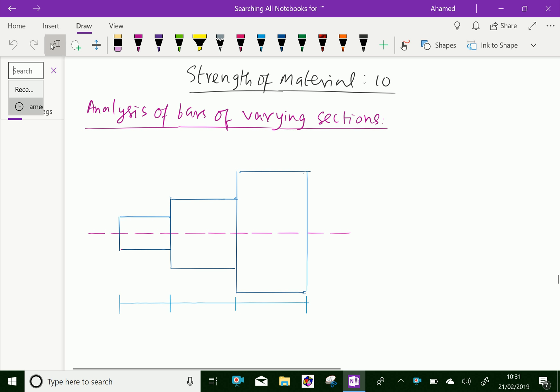Here, look at this figure. A bar of different lengths, different diameters, and hence different cross-sectional areas is given in the figure. Here, axial load P is applied axially.